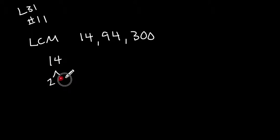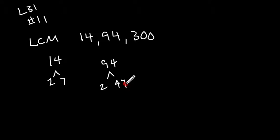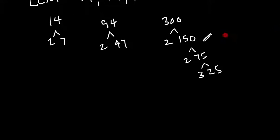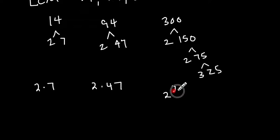So I did 14, which is 2 and 7. 94 is 2 and 47. 47 is prime — if you add 4 and 7, you get 11; if it added up to 12, you'd know it was divisible by 3, but this is a prime number. And then 300: 2 times 150, 2 times 75, 3 times 25, and 5 times 5. Now let's write them with exponents: 14 is 2 times 7, 94 is 2 times 47, and 300 is 2 squared times 3 times 5 squared.